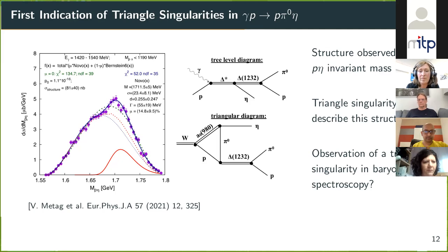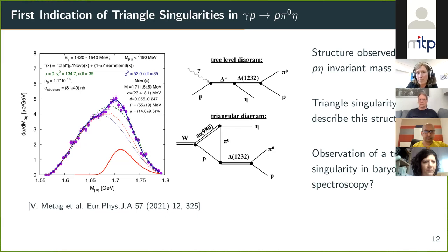The commenter notes that they could reproduce the data of Woods nicely with this calculation. Annika responds she was not aware of this paper and will look into it. A further question is raised: in the specific channel where the triangle singularity is claimed, there is also a tree-level contribution from resonance decay directly to π⁰η via a₀(980) and a proton — doesn't the Schmid theorem prohibit the triangle singularity there?